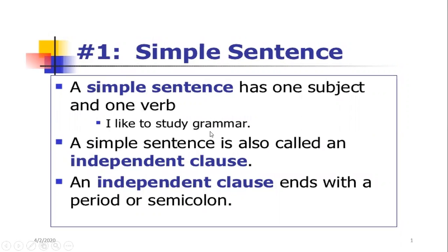I like to study grammar. A simple sentence has a subject and verb — it can be a complete thought or a complement, which you have to talk about the object. A simple sentence is also called an independent clause. An independent clause can stand alone, and ends with a period or semi-colon.